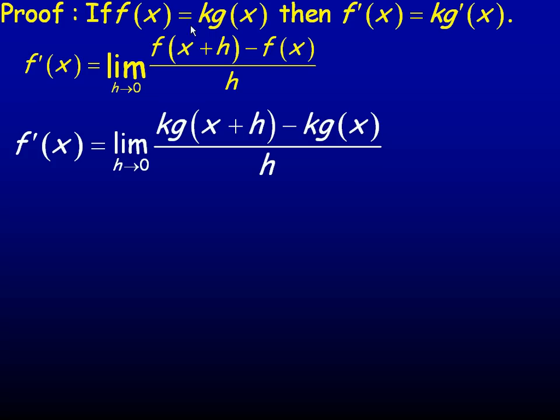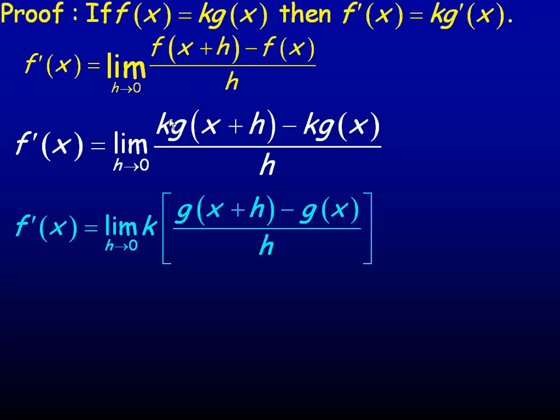f(x), of course, is the original function, k times g(x). Now, notice that k here is a common factor. We can factor it out of the numerator, and there it's factored out.